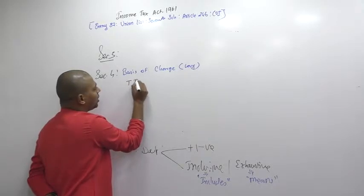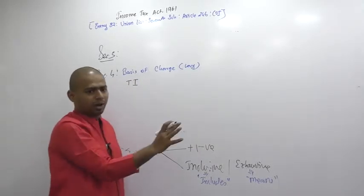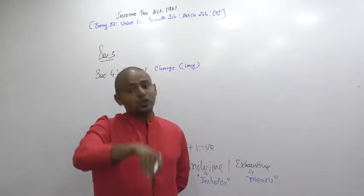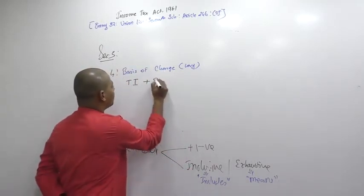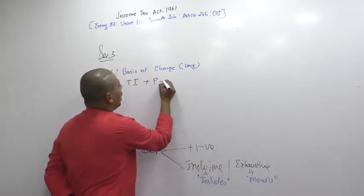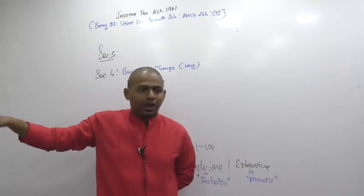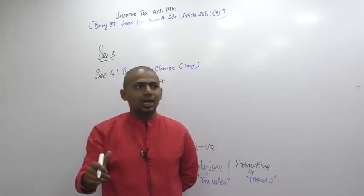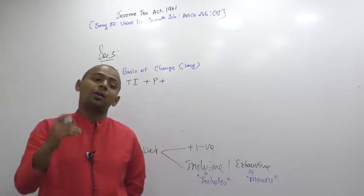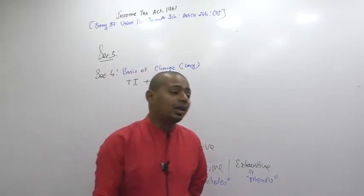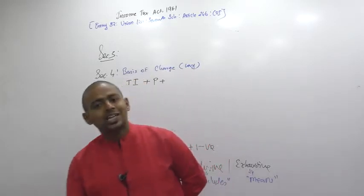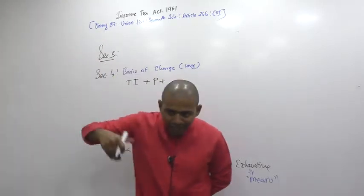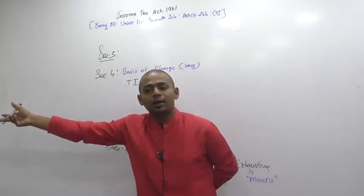Section 4 is known as the basis of charge — we call it levy. Total income: taxes are charged on which income? Total income. Earned by whom? A person. You earn in a previous year, and you pay tax in an assessment year. I know income of 17-18, but I don't know income of 18-19 yet because 18-19 is still ongoing. So when you pay tax in 18-19, you don't pay on 18-19 income — you pay tax on 17-18 income. You stand in the assessment year to pay tax on the previous year's income.